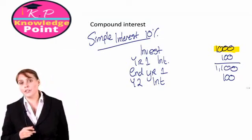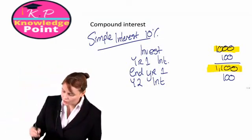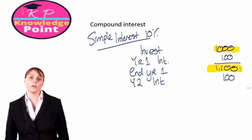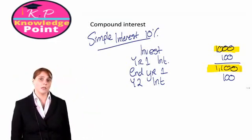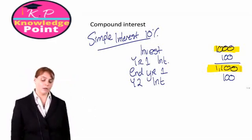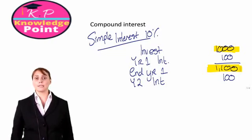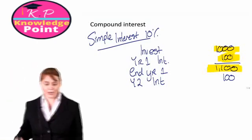What I want to highlight here is that at the end of year one our investment is worth 1,100, but during year two we are only going to earn interest on the original investment. In other words, when simple interest is applied we don't earn interest on the interest. With compound interest it's different.